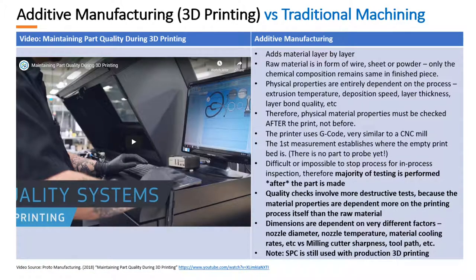Now let's look at 3D printing. In this case, material is added during the process instead of removed. So instead of having the full piece of raw material there to start with, you effectively have no raw material to start — except on a spool or in sheet form — and the form of the raw material is changed completely during the process. Let's have a look at the video.